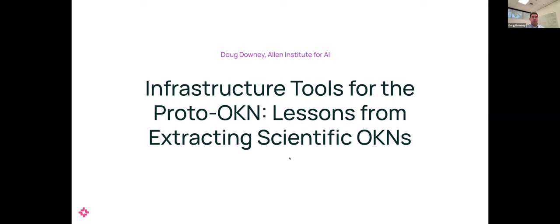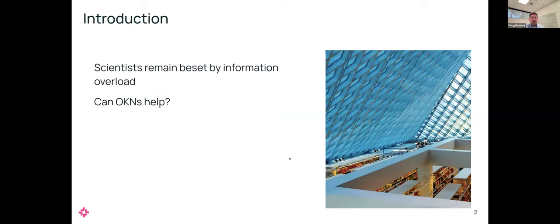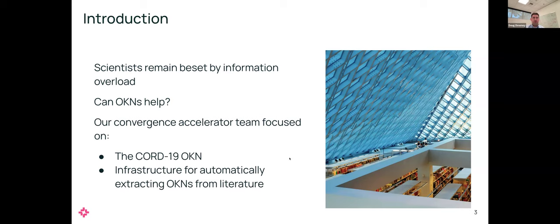Thank you, Florence. I'm going to present some of the work we did as part of the Convergence Accelerator program, which is focused on OKNs. I work on the Semantic Scholar team at the Allen Institute for AI. We're motivated by a problem: the pace of scientific publication is growing continuously, and scientists have an increasingly hard time learning about the most important developments in their field. If we could automatically extract knowledge networks from science, that might allow scientists to understand and draw insights from literature much more rapidly, accelerating science and benefiting humankind. We were part of the first track of the Convergence Accelerator program from 2020 to 2023, aimed at developing open knowledge networks and their tools and applications.